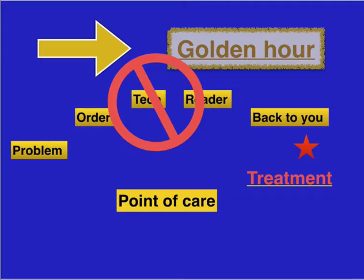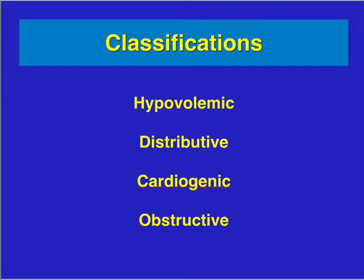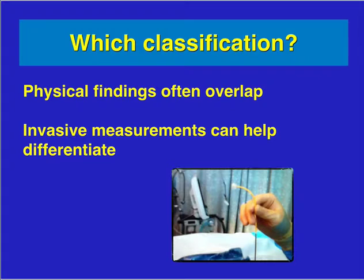These are point-of-care bedside ultrasounds. Our goal is to perform this in the golden hour and make a decision on the patient during a clinical management dilemma. The classifications for shock are hypovolemic, distributive, cardiogenic, and obstructive. You can have trauma or hemorrhagic with hypovolemic, sepsis with distributive, myocardial infarction causing cardiogenic, and pulmonary embolism is one of the most common obstructive shocks.